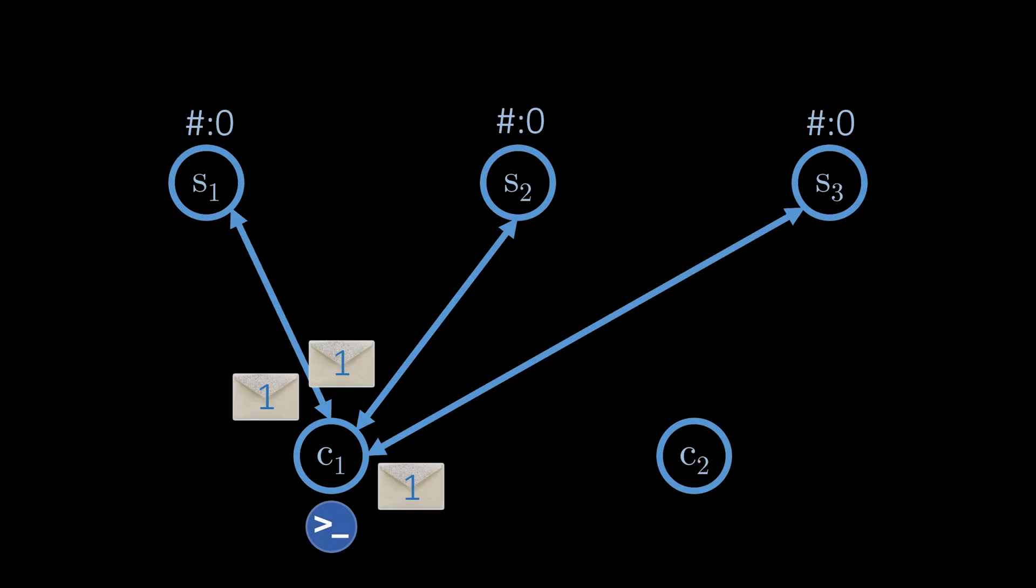Armed with these techniques, we are now in the position to discuss the Paxos protocol. We explain the protocol using this example with three servers and two clients. Each server stores the number of the most recent and therefore valid ticket. In the beginning, each server simply stores the number 0 because no tickets have been issued yet.